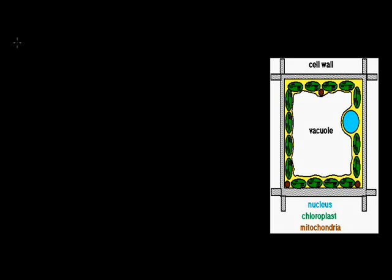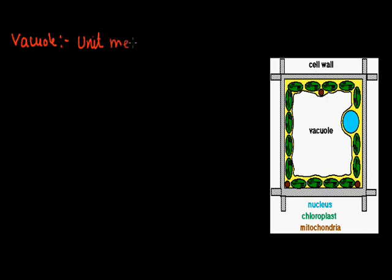Have a nice day, students. Today we discuss about vacuoles. Vacuoles are unit membrane structures, or cell organelles. These cell organelles are covered by a unit membrane, which means a single membrane.